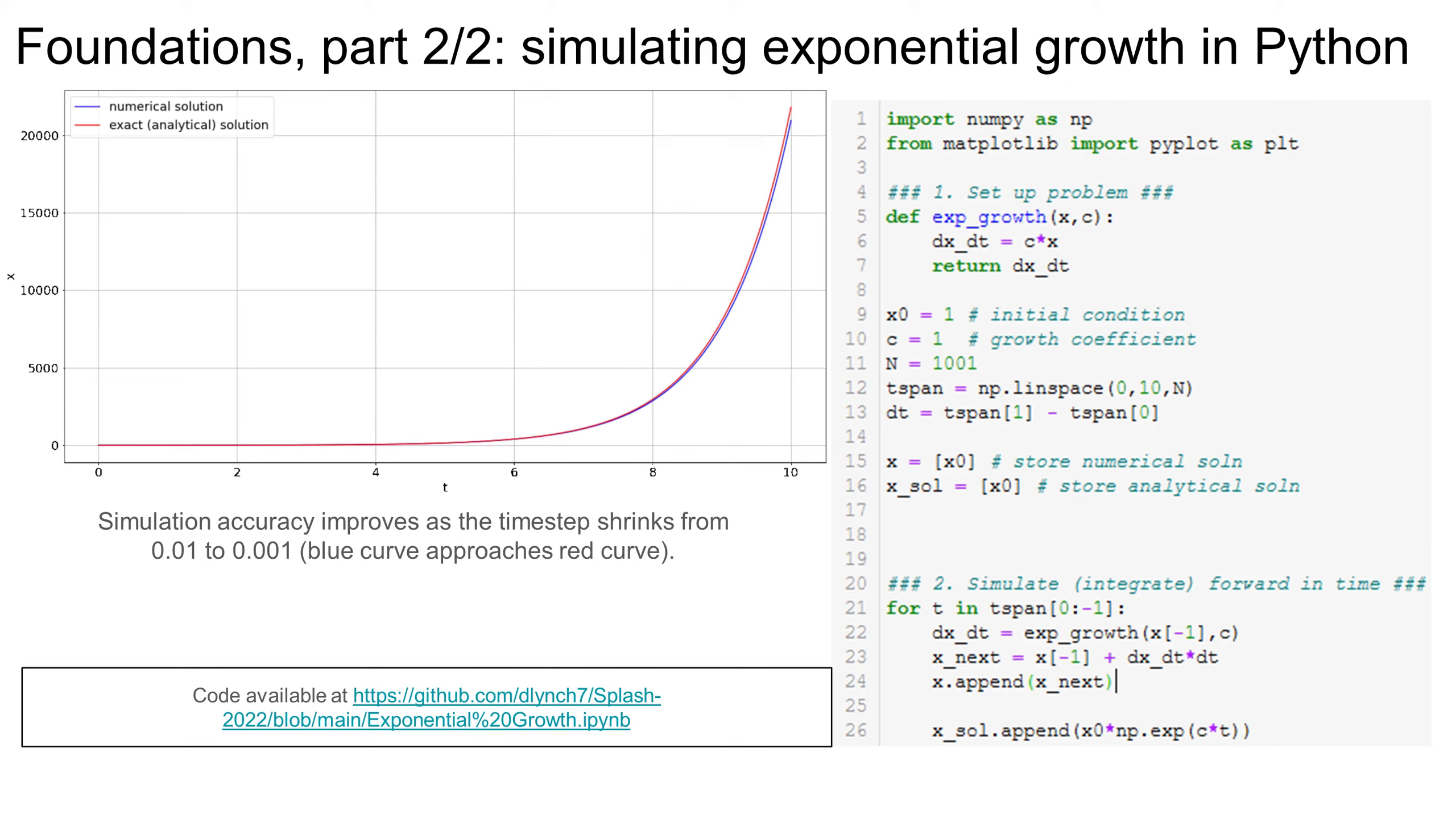We can run our simulation for a variety of time step sizes, and we see that as the time step gets smaller and smaller, our numerical solution, which is the blue curve, approaches the true analytical solution, which is the red curve. If you want to play around with this example yourself, the code is available on GitHub through a link in the description below.